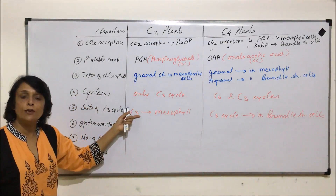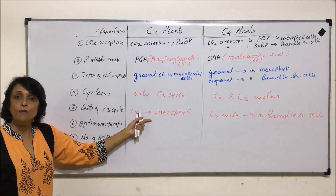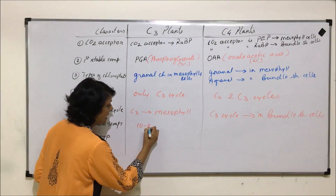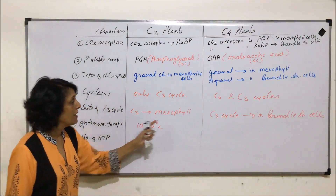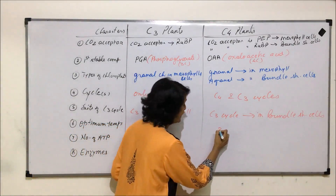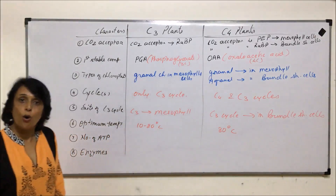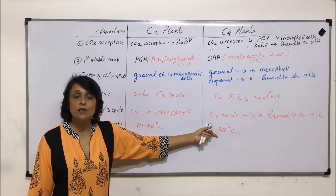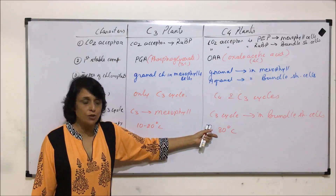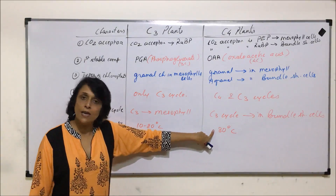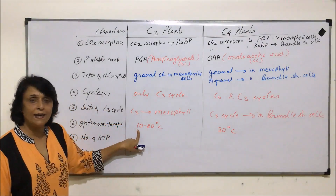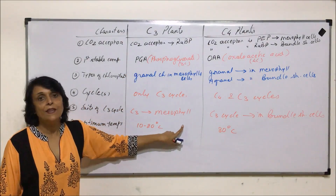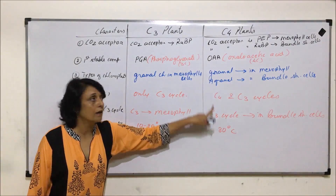We now know why this location has changed — it is to avoid the problem of photorespiration. The optimum temperature for C3 cycle is 10 to 20 degrees Celsius, whereas the C4 cycle can take place at higher temperatures, around 30 degrees Celsius. Because of this adaptation, C4 plants do not suffer from photorespiration at higher temperatures, whereas in C3 plants, temperatures above 10–20°C lead to photorespiration.